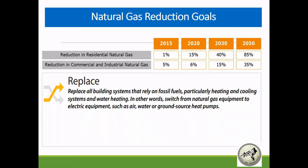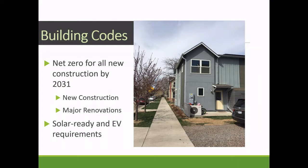We're also taking on commercial and industrial, but recognizing where the technology is today, we're focused first on residential and hoping technology catches up on the larger commercial side. We have building codes on track for net zero for all new construction and major renovations by 2031, with solar ready and EV ready requirements, which become particularly critical as we talk about heat pump adoption and making this an economically viable model for our residents.